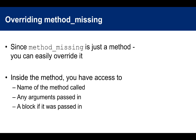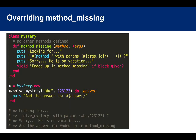Inside method_missing, you have access to the name of the method that was called, the arguments passed in, as well as a block if one was passed. For example, you want to write a mystery class that doesn't have any methods defined except for method_missing, which has access to the method name and the arguments as an array with splat. It will say 'looking for [method name] with params [params]... sorry, he's on vacation.' And if a block is given, it will say 'ended up in method_missing' and yield to the block.